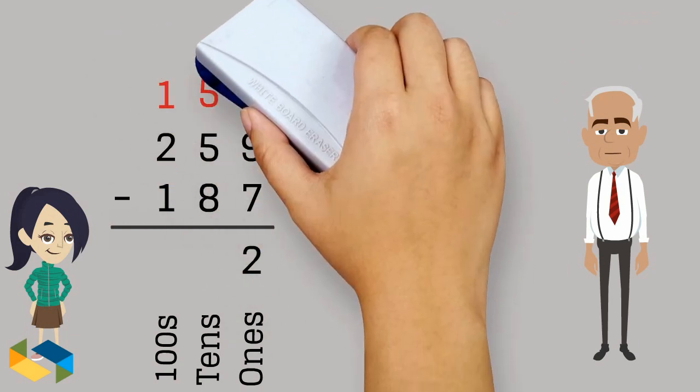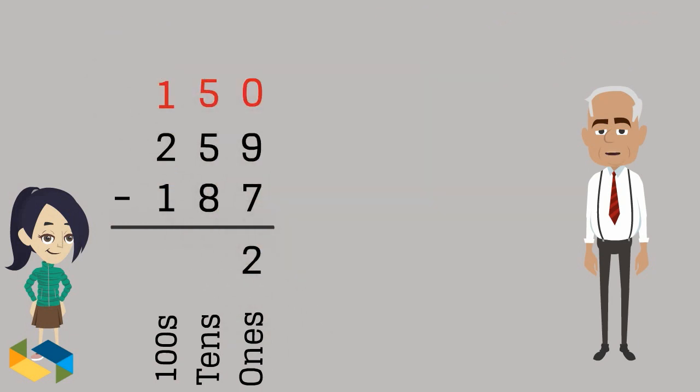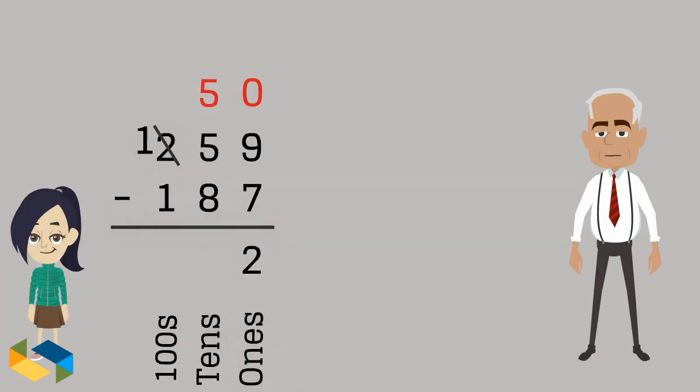The way we write this is we cancel the 2 at the hundreds place and replace it with 1, implying this to be 100. And we place a 1 against the 5 in the tens place, indicating this to be 150, which as you observe, has now become a bigger number than 80.